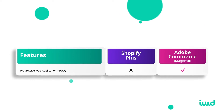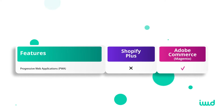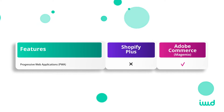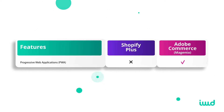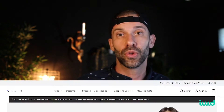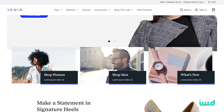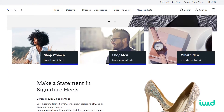Another feature that Adobe Commerce comes with is PWA — Progressive Web App. Basically, it's code that will speed up your site and make it feel more like an app: super responsive and able to work offline. This comes natively with Adobe Commerce, where Shopify Plus doesn't have this either.